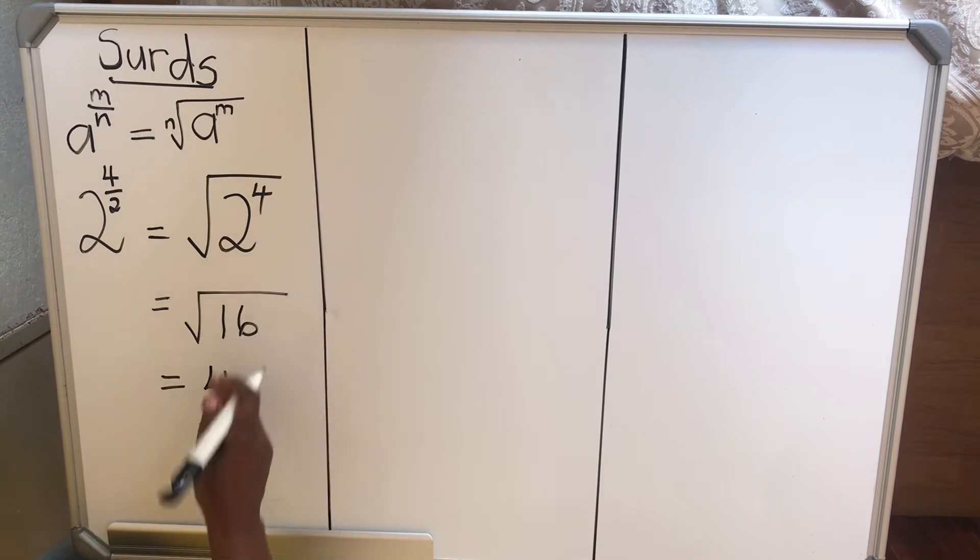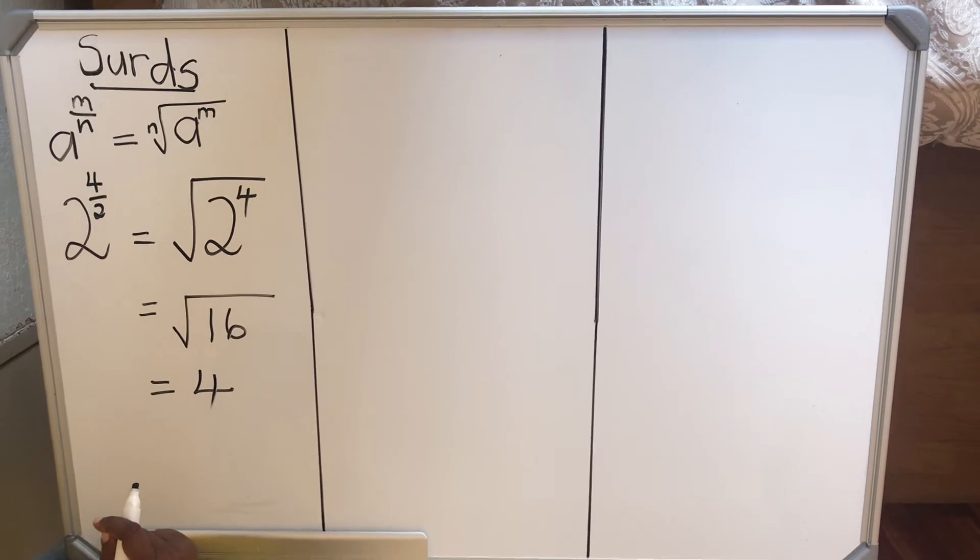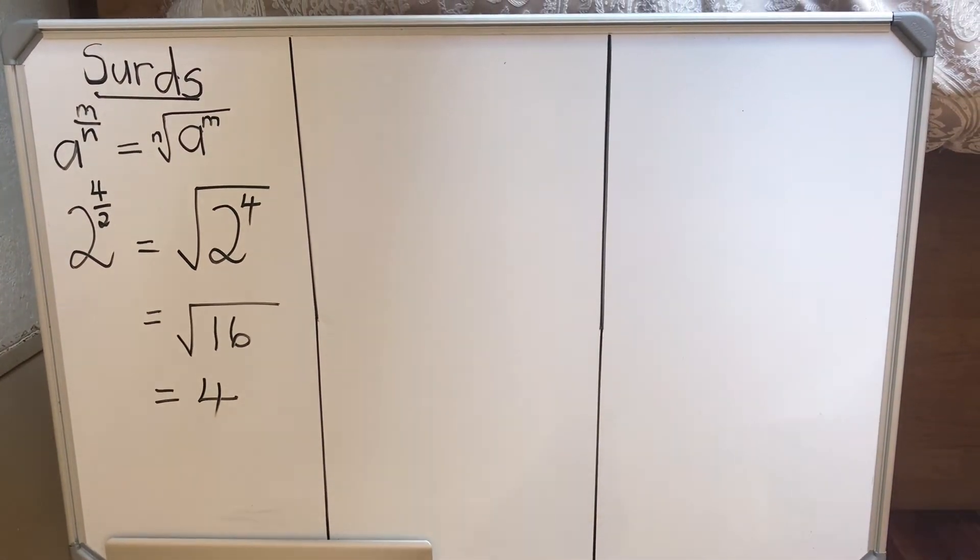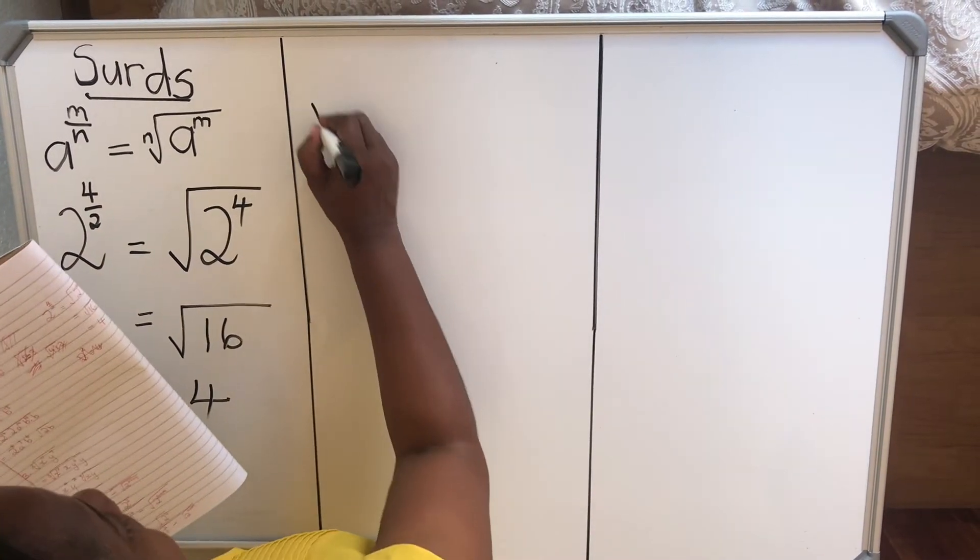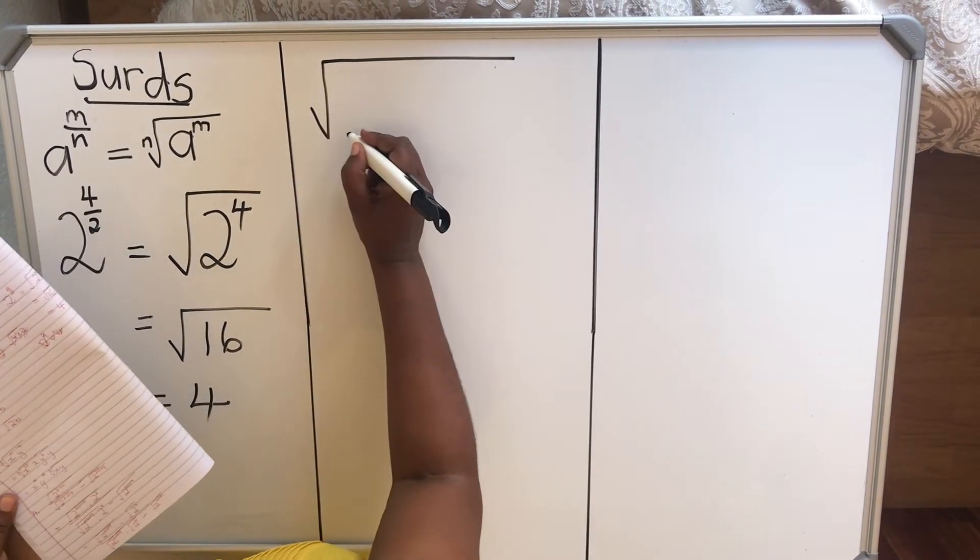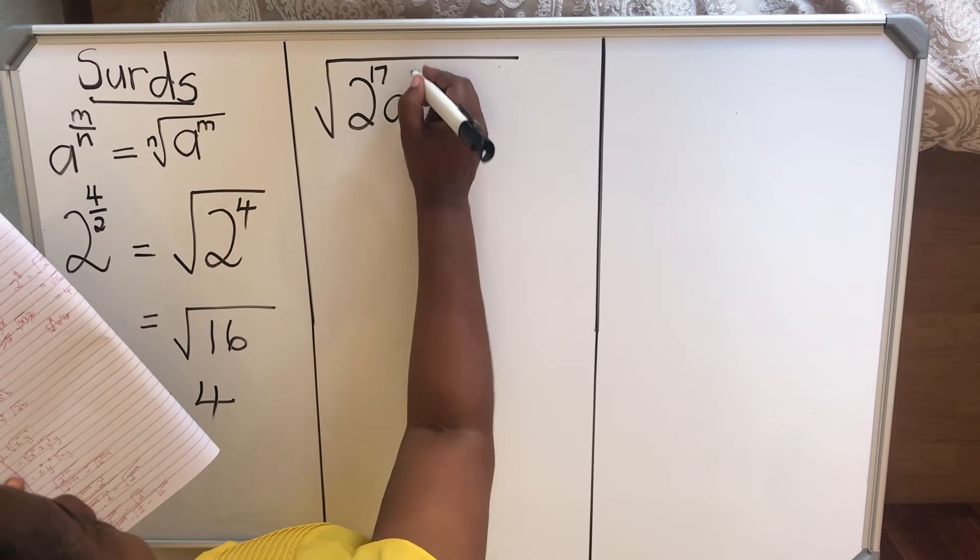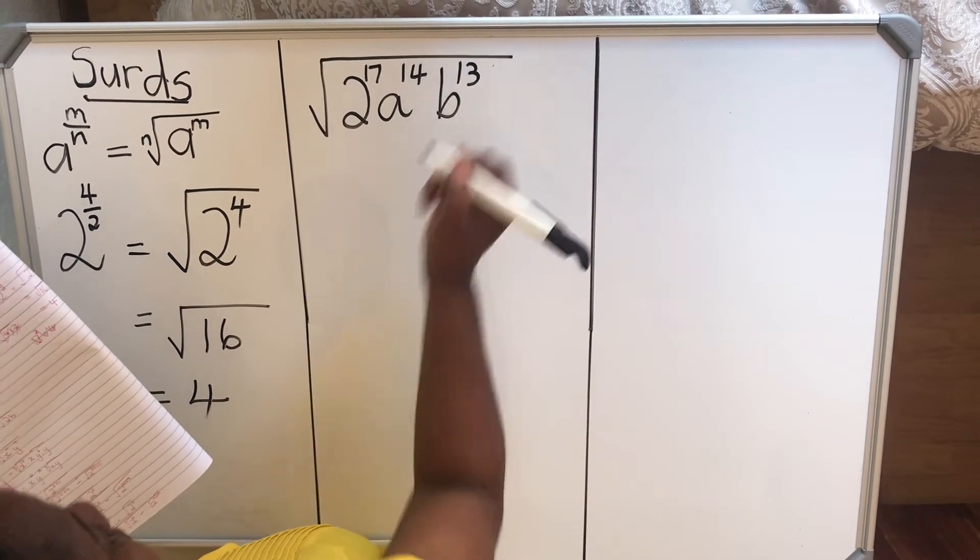So this is how it's done. We're going to look at a different example and see how you go about. Let's take an example. When you have, for example, square root of 2 to the power 17, a to the power 14, and b to the power 13.